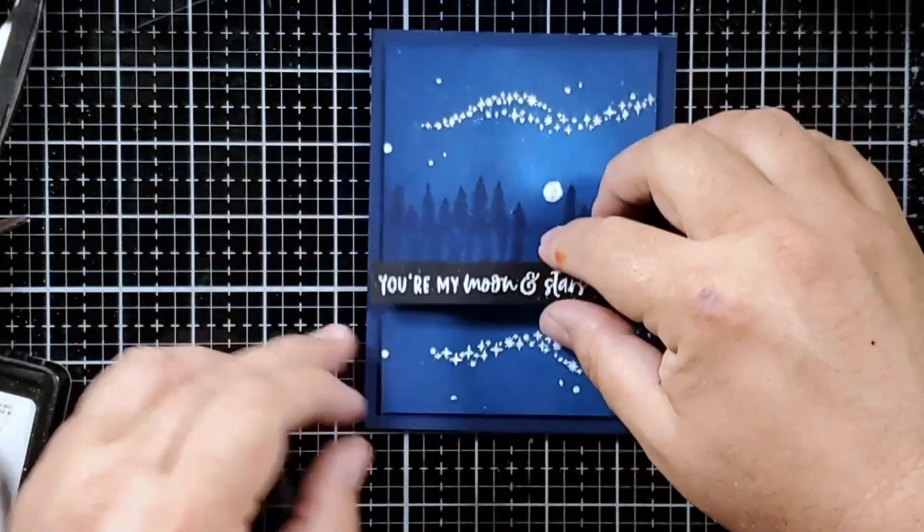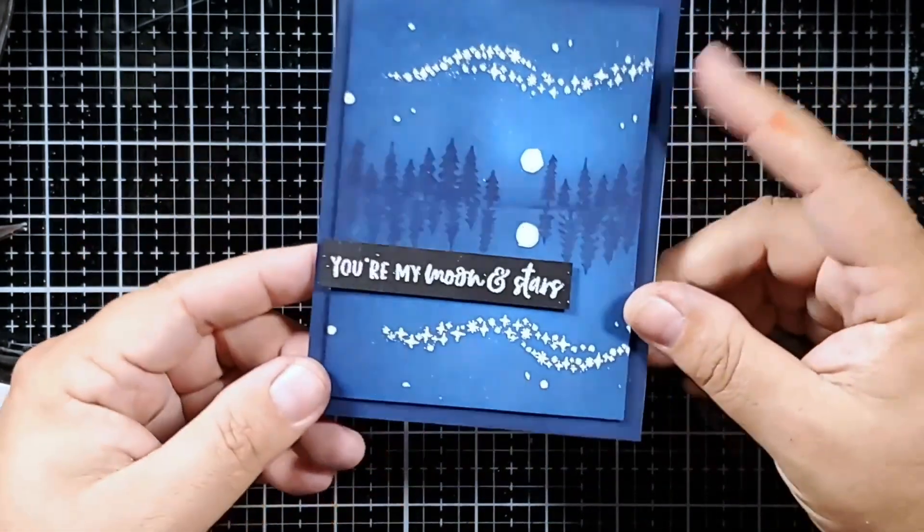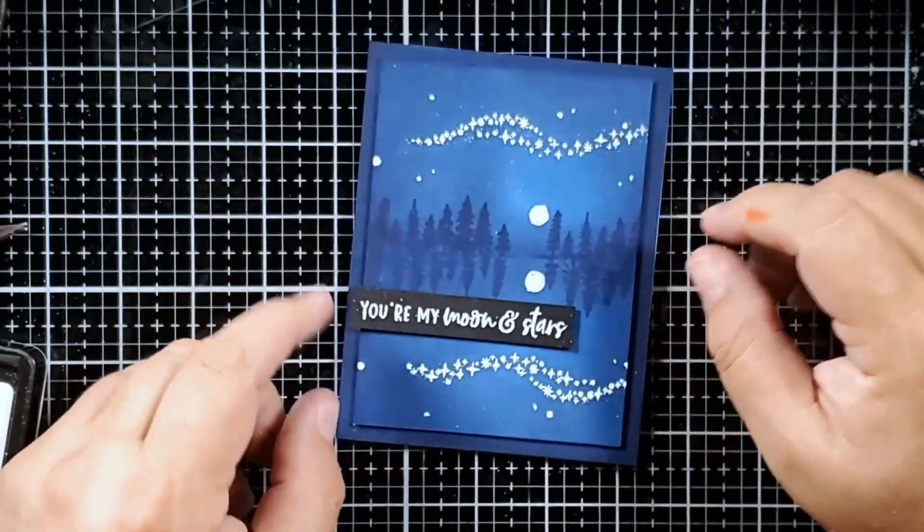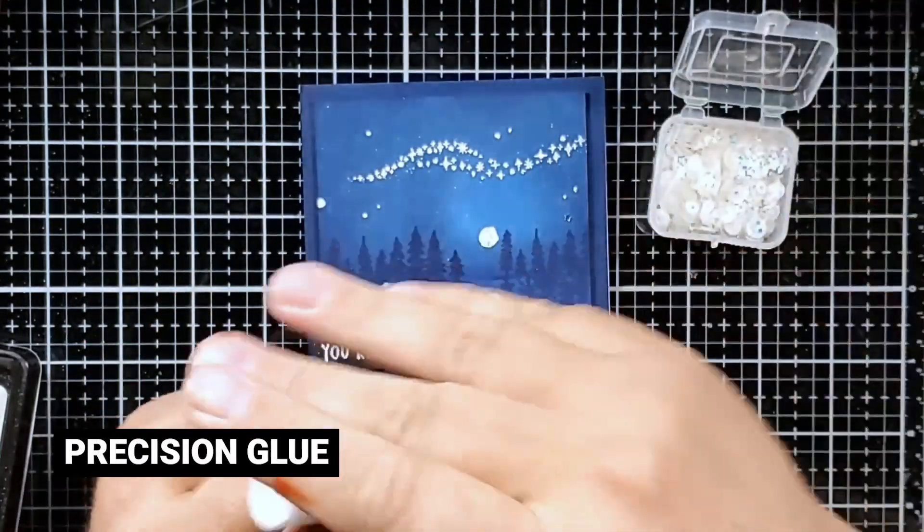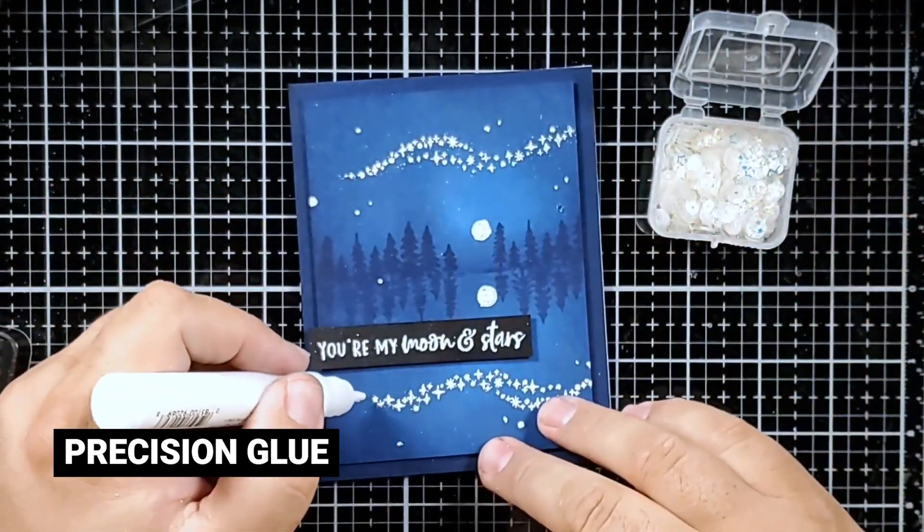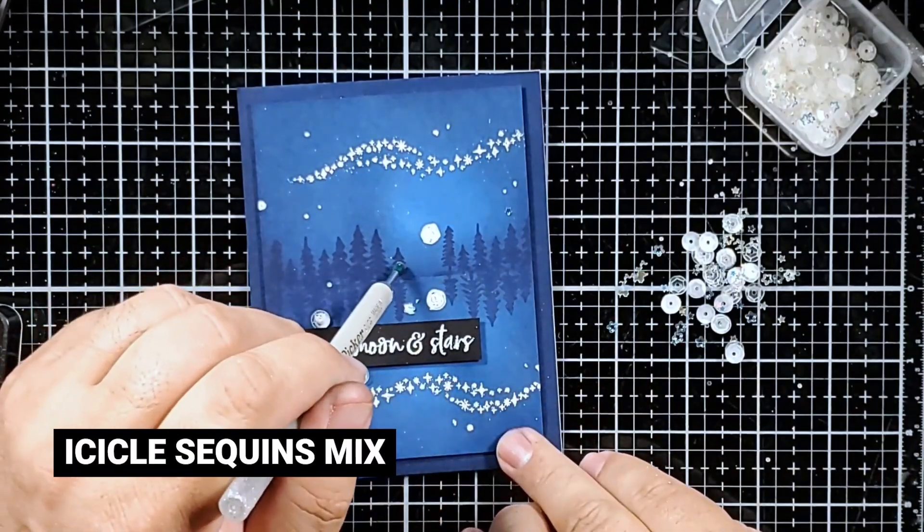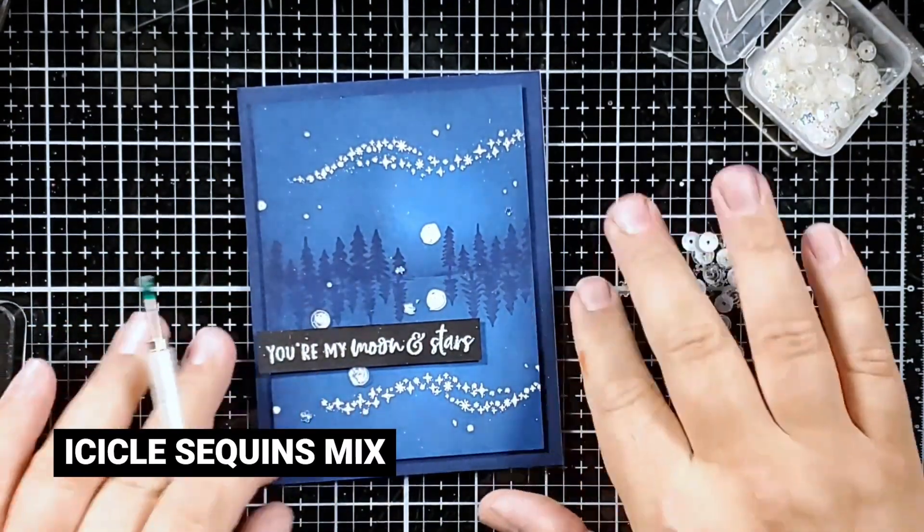Then I'm going to take out some foam tape, trim it down, add it to the back of my sentiment strip and pop it up there on the front. Now you can see some stragglers of embossing powder in the bright light on my video, but I couldn't actually see them in person so I didn't see them there. But I can take care of them with a sand eraser afterward.